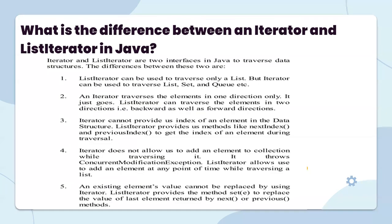What is the difference between Iterator and ListIterator in Java? Iterator and ListIterator are two interfaces in Java to traverse a data structure. The difference is: ListIterator can be used to traverse only a List, but Iterator can be used to traverse List, Set, and Queue. Also, Iterator traverses elements in one direction only, while ListIterator can traverse elements in two directions — forward and backward.